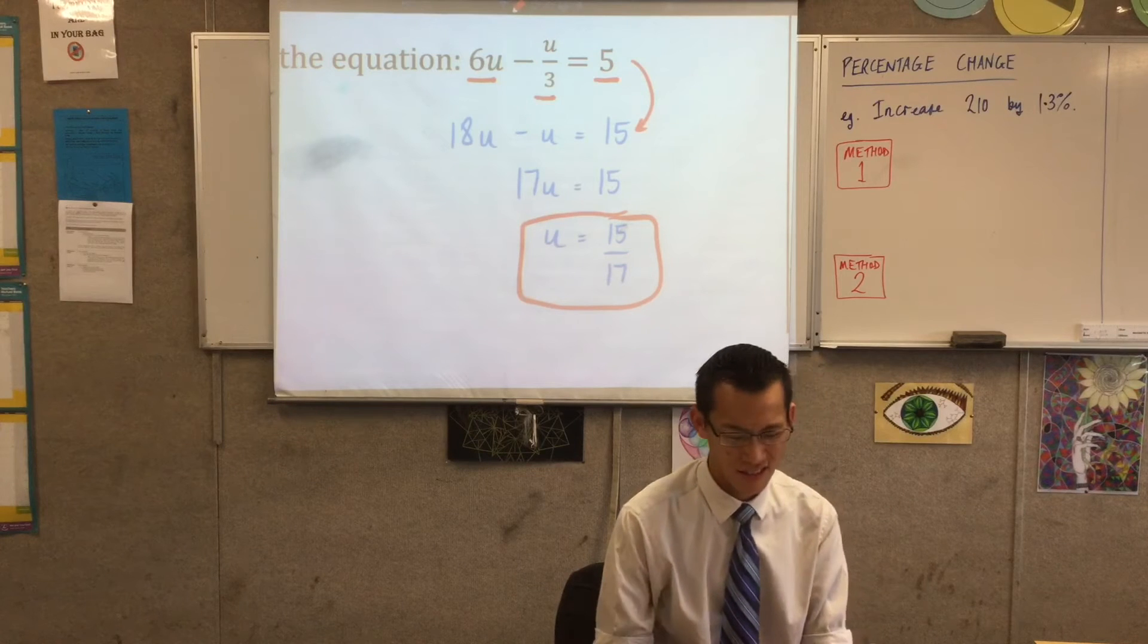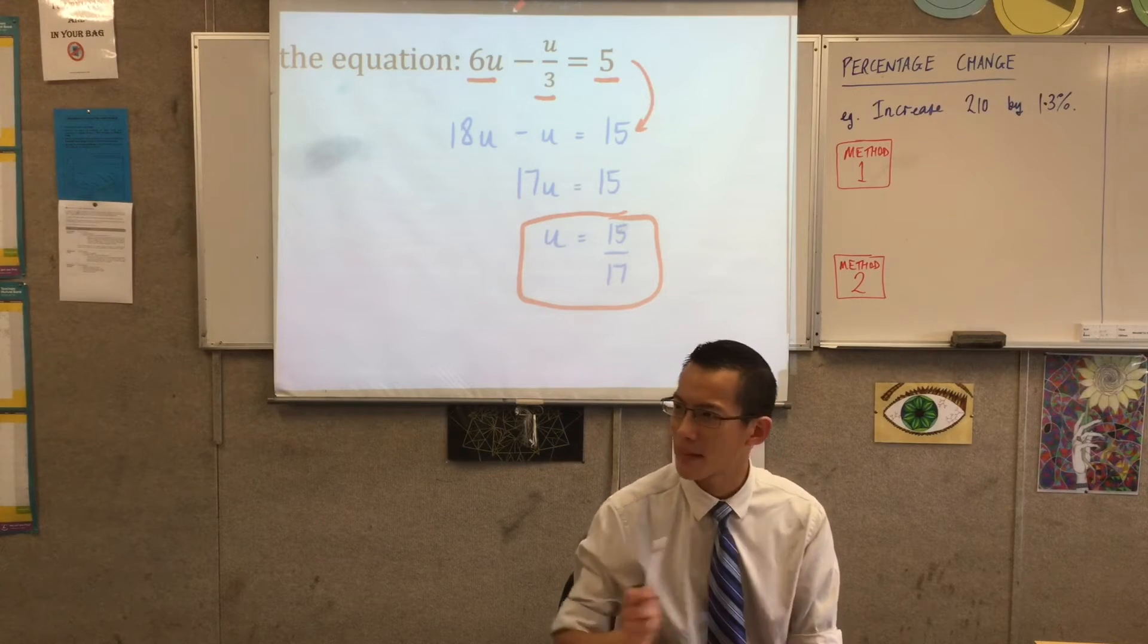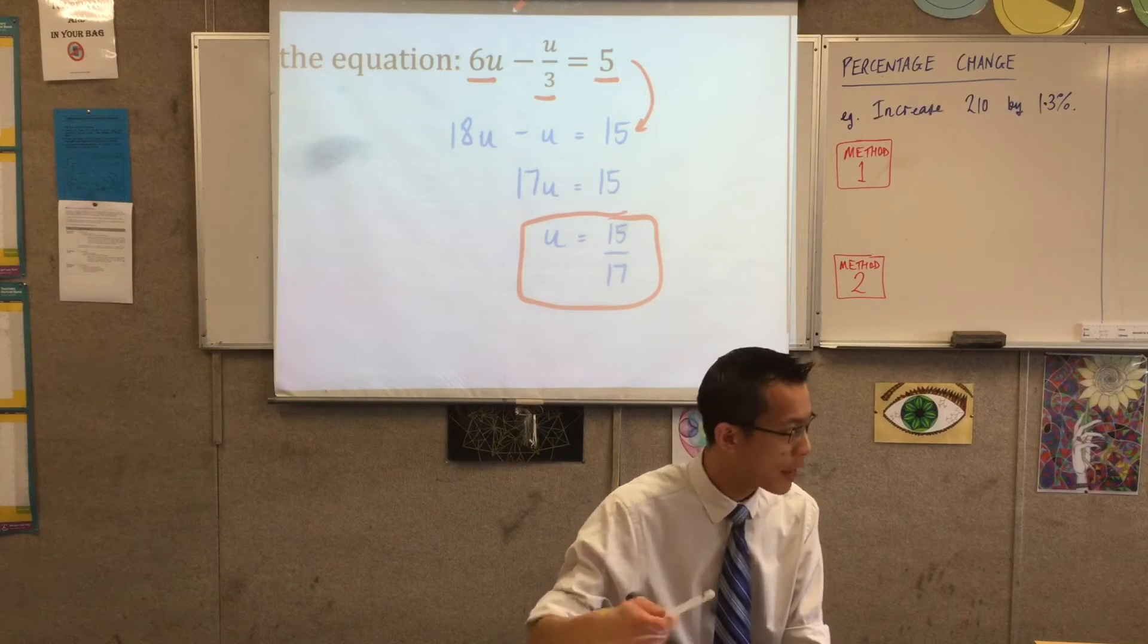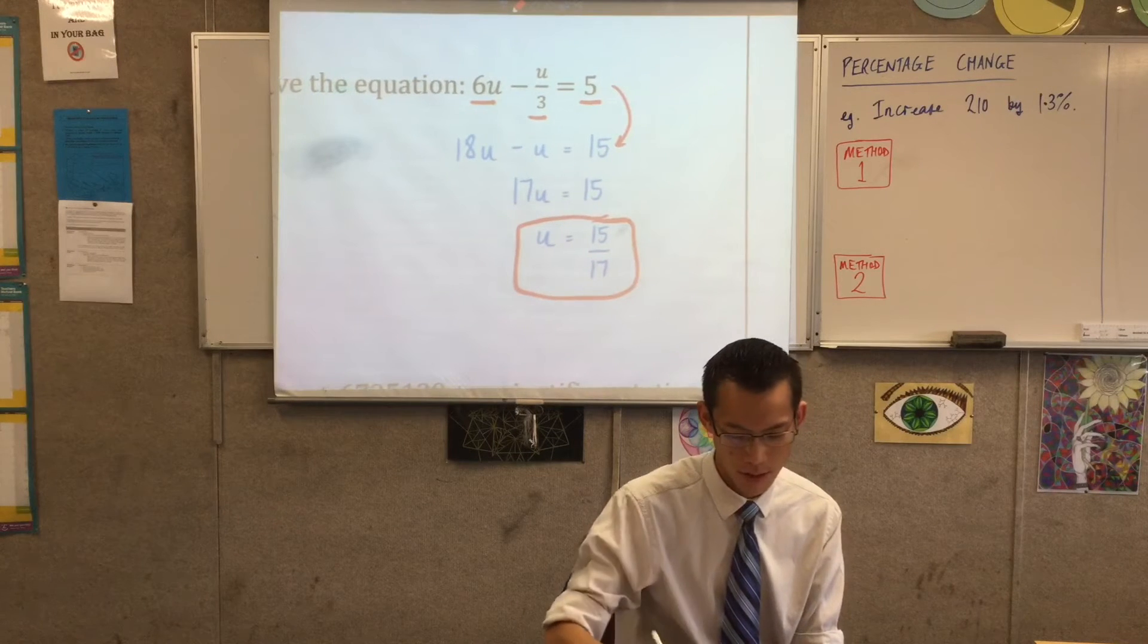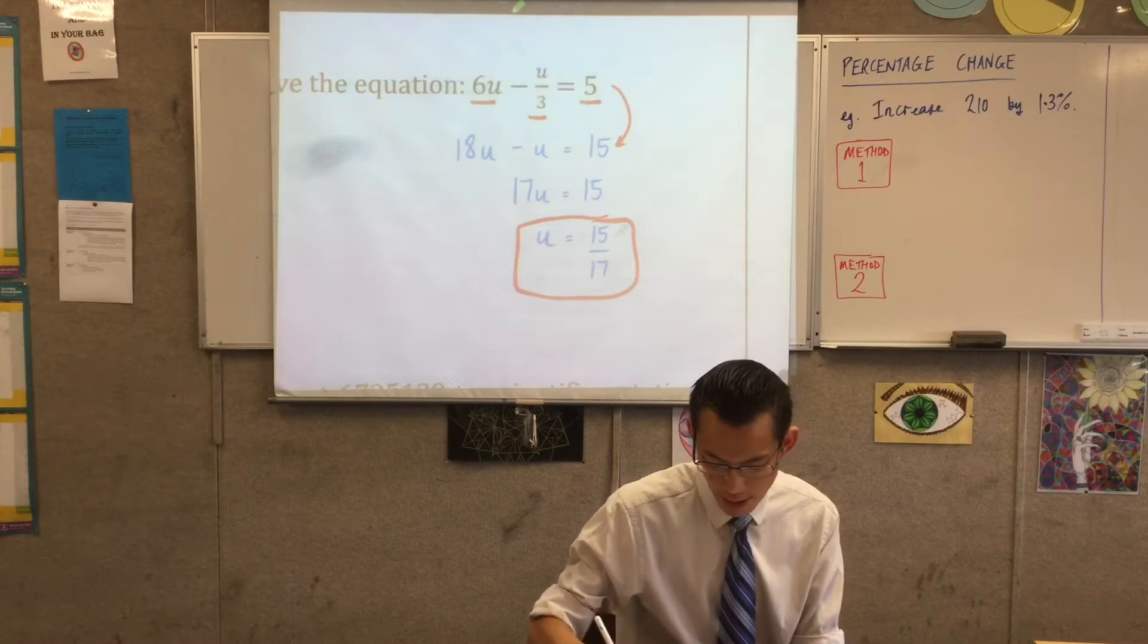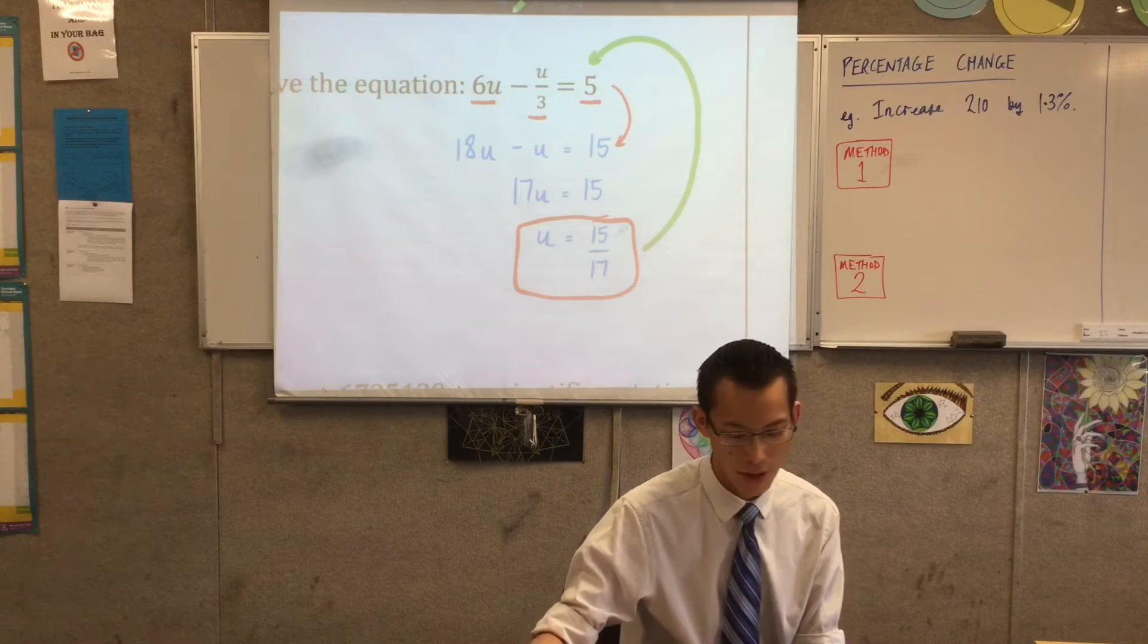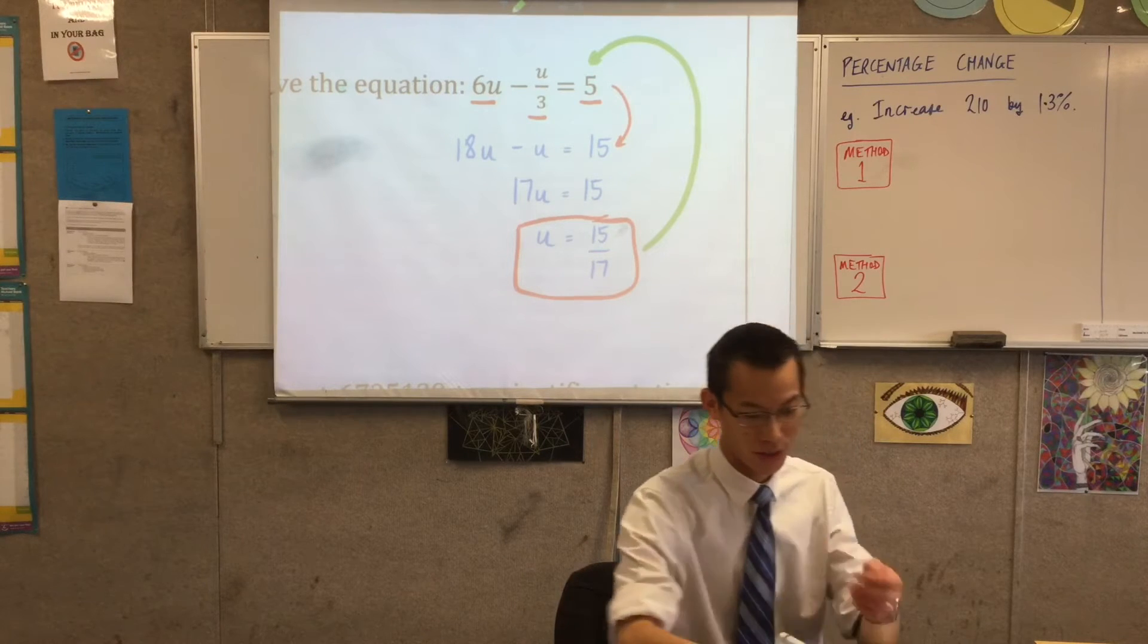You might look at that number and think, oh, it's a bit weird, like 15 over 17? Really? But there's no reason to doubt. What could I do to check to make sure I was actually right? Yeah, you've got the first line in here, which apparently should work if I got the right value of u. Now, you could do that by hand, but of course, you've got a calculator which can do this for you.